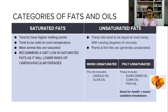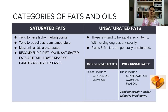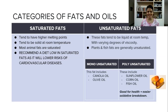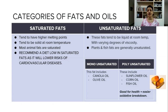Unsaturated fats are liquid at room temperature and are mainly obtained from plants and fish. Compared to saturated fats, they are very healthy for our body. They are divided into two types: monounsaturated fatty acids (MUFA) and polyunsaturated fatty acids (PUFA). You may have seen these terms in cooking oil advertisements. MUFA we get from olive oil, and PUFA from sunflower oil, fish oil, and corn oil. Unsaturated fats are good for our health.